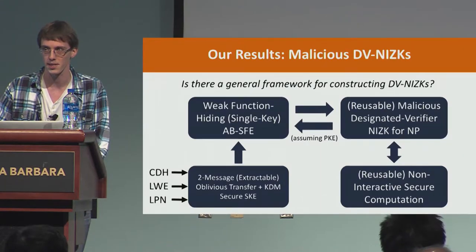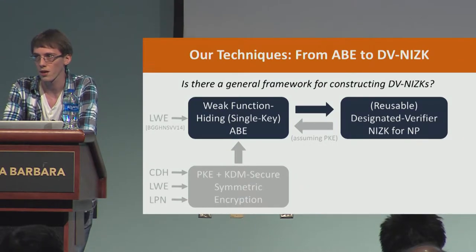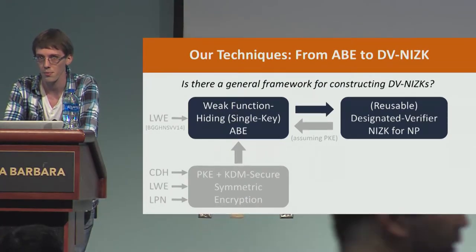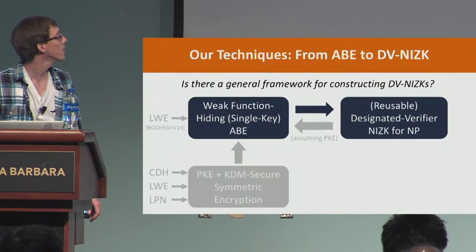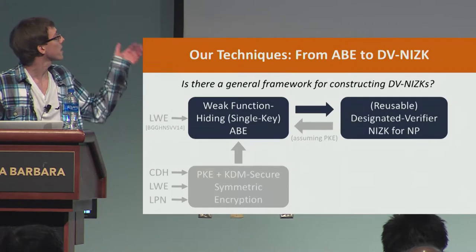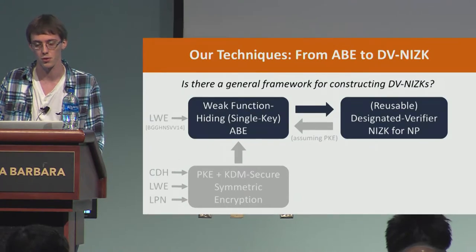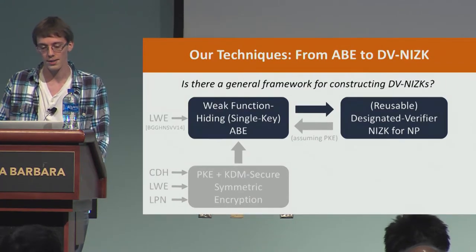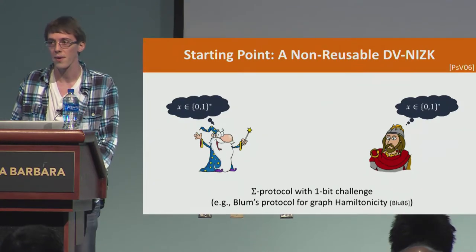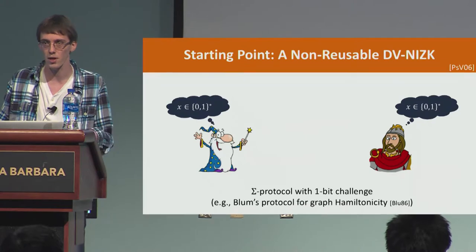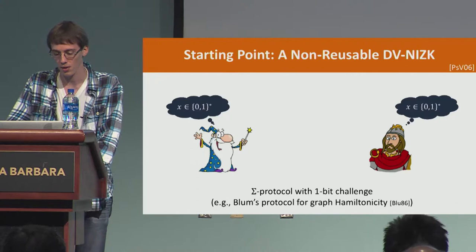This malicious designated verifier NIZK has connections to reusable non-interactive secure computation, allowing reusable non-interactive secure computation from any of these assumptions. For the rest of the time, I want to tell you about how we prove it, focusing on the main construction: the arrow from weak function-hiding single-key ABE to designated verifier NIZK. I'll recall the designated verifier NIZK from any public key encryption scheme satisfying the weaker one-time soundness, due to Pas, Shalaten, and Vaikuntanathan.